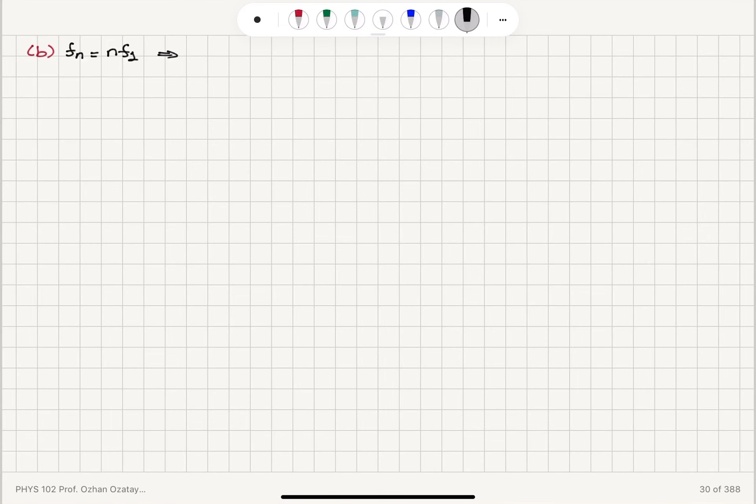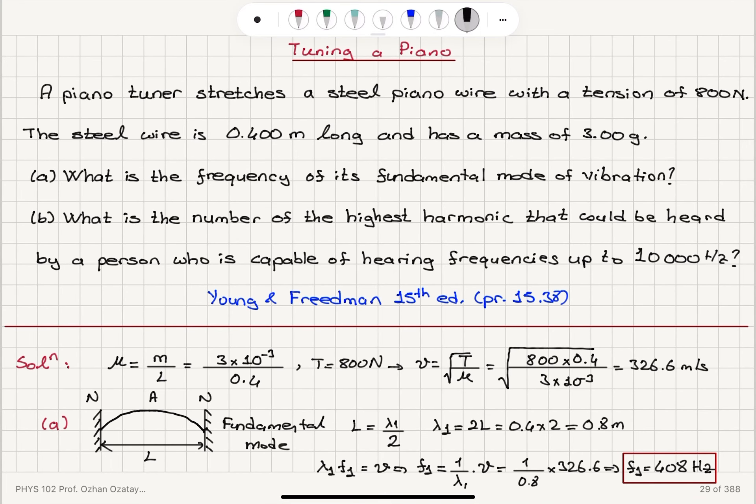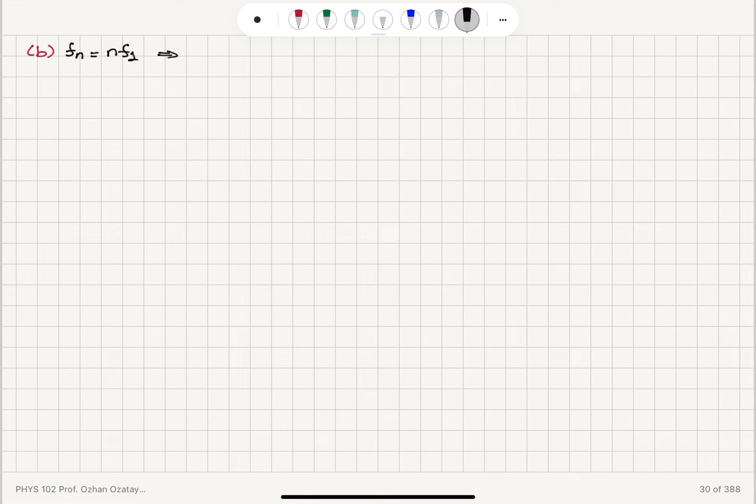So you can see that the next second harmonic would be node anti-node node anti-node node, and that would correspond to a wavelength of L. And actually, we know that lambda N is 2L divided by N, and the frequencies are N times F1.